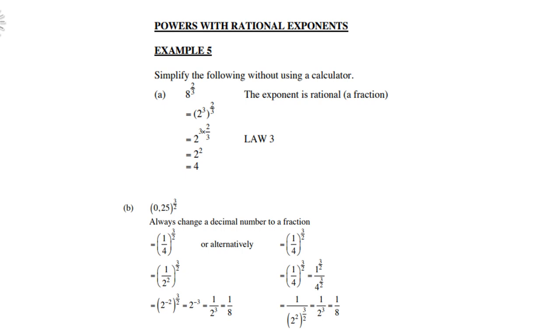Or alternatively, you can take the 1/4 to the power 3 over 2 and then distribute the 3 over 2 into the bracket. Then you get 1 to the power 3 over 2 and you get 4 to the power 3 over 2. Of course, 1 to any exponent remains 1, and then the other one will be 1 over 2 cubed, which is 1/8.